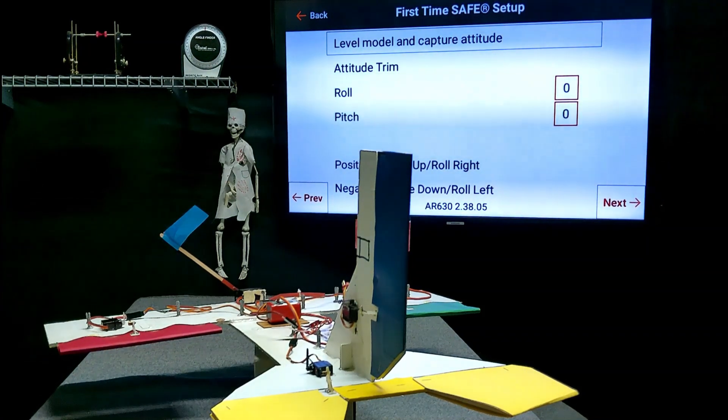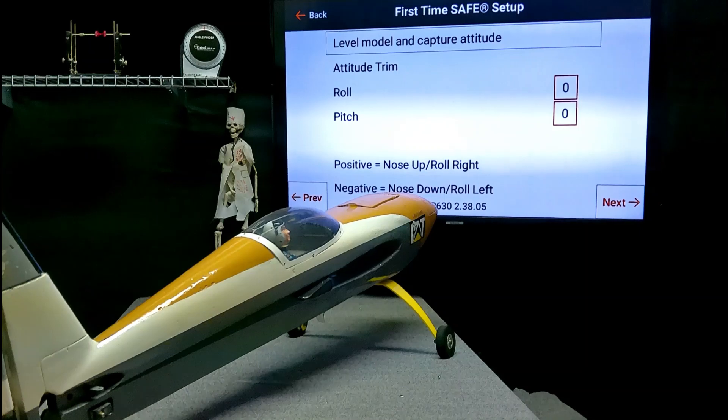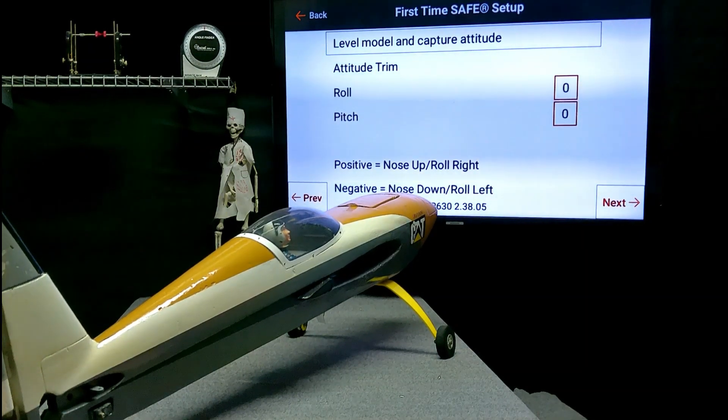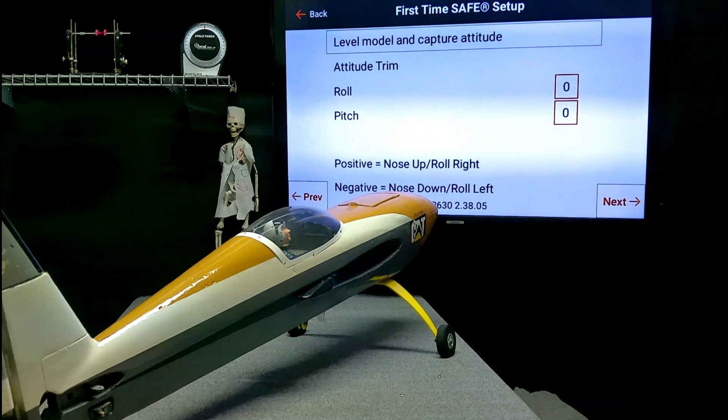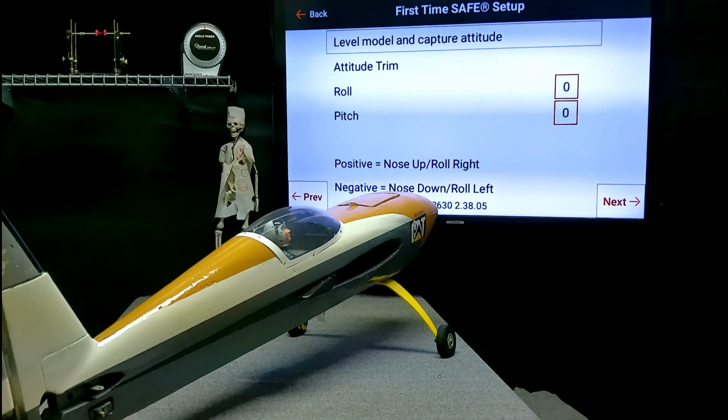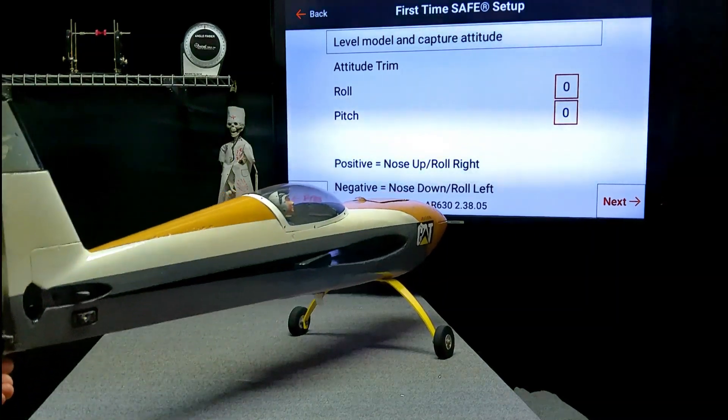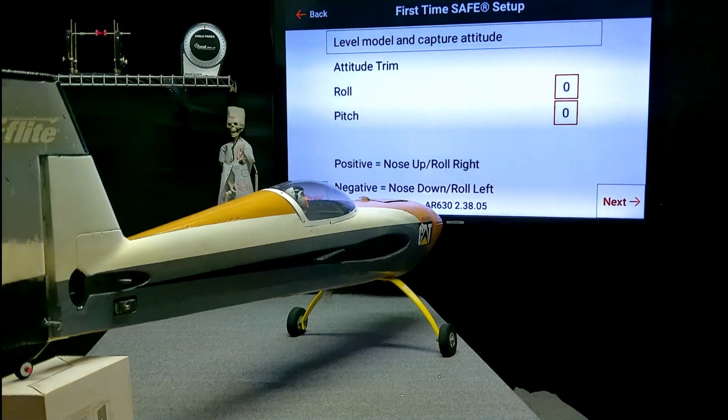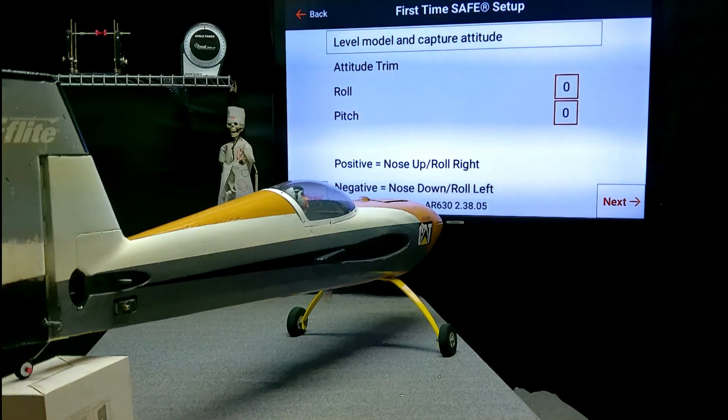Level the model to capture the attitude. Now, when it says level, this is level flight. If you were setting up the forward programming with a tail dragger plane like this one, that is not level flight. Right now, we're figuring out level flight for the safe select to hold the plane level. If you told the receiver that this was level flight, then when safe was turned on, the plane would be flying up. So, we need to level the plane. You need to get it level. Use a level. Use your awesome eyeballs. The plane needs to be level, front to back, side to side, level.